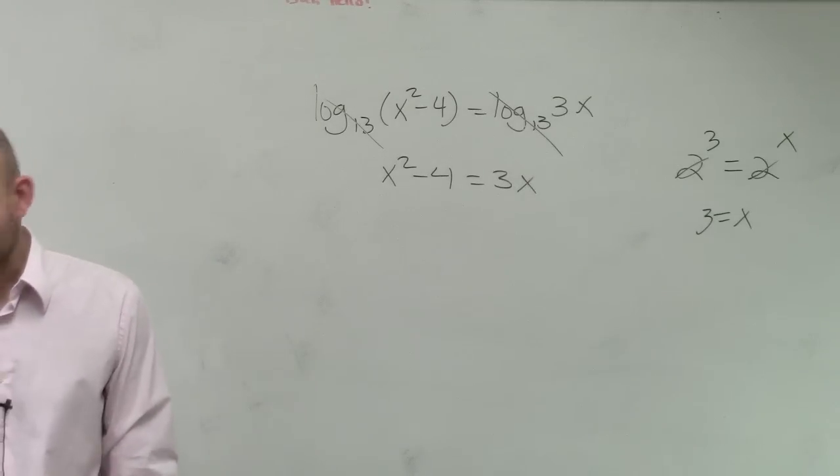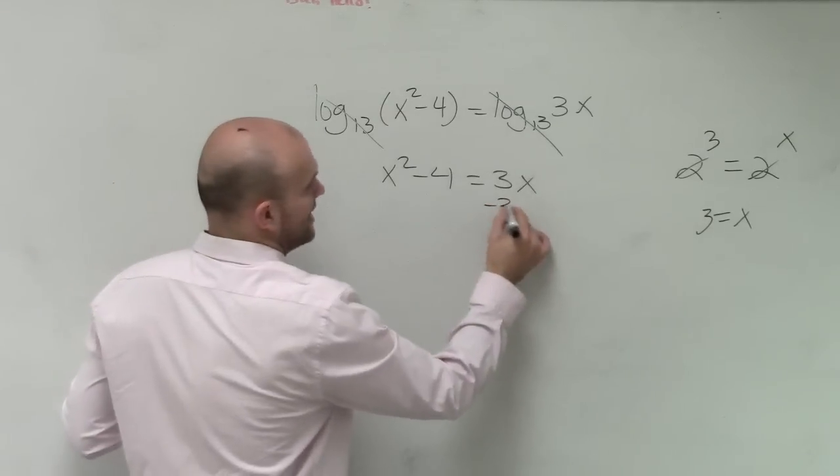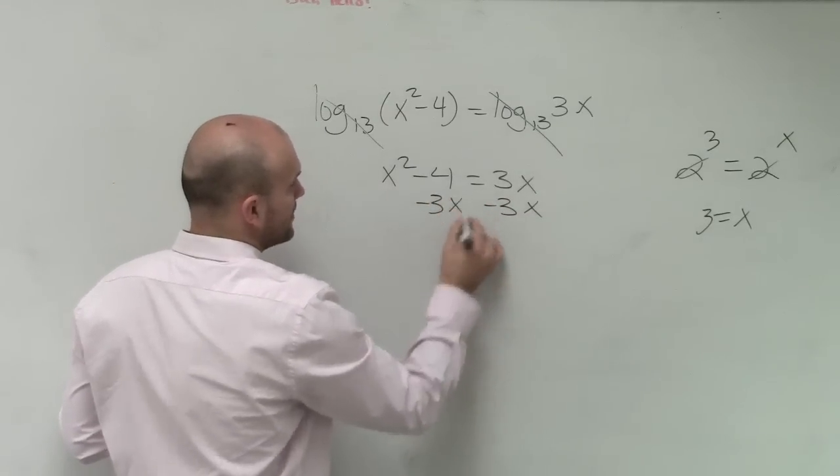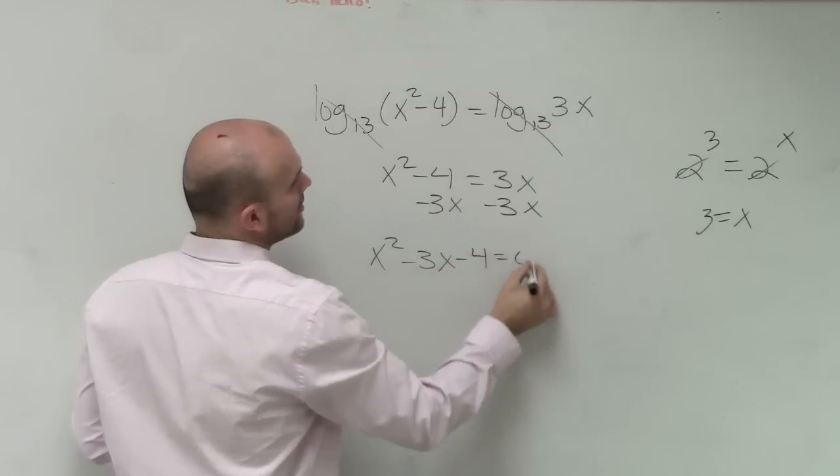Then doing exactly what Demetrius said last time, we need to now set this equal to 0. So I subtract the 3x on both sides, and now I have x squared minus 3x minus 4 equals 0.